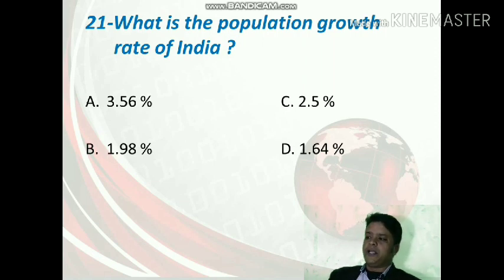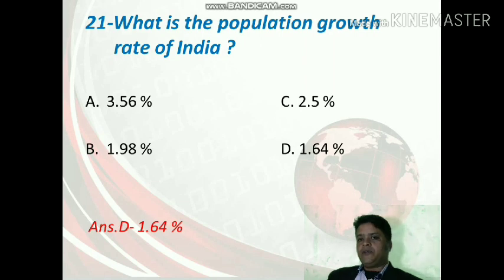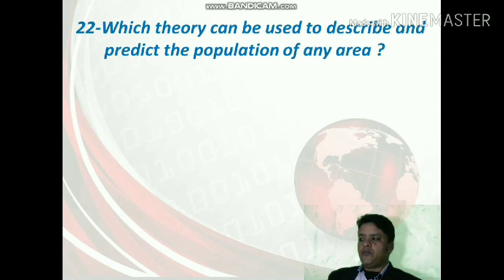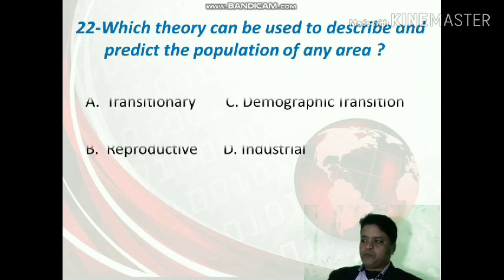What is the population growth rate of India? The options are 3.56%, 2.5%, 1.98%, or 1.64%. The correct option is D — India's population growth rate is 1.64%.